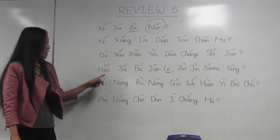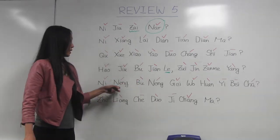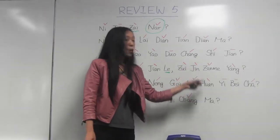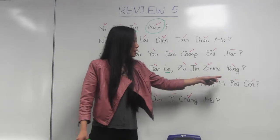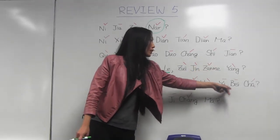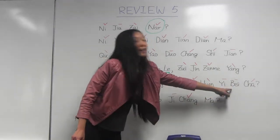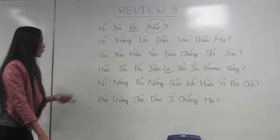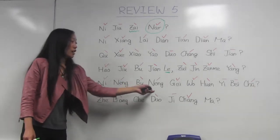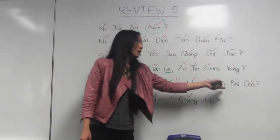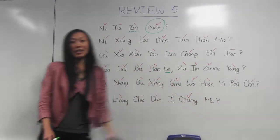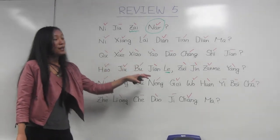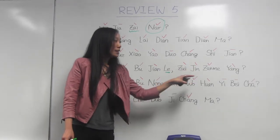你能不能给我换一杯茶? 你能不能 means 'can or cannot.' 给我 means 'give me.' 换 means 'change' or 'exchange.' 一杯茶 means 'one cup of tea' — 杯 is the measuring word for a cup of something. So all together: can you or can you not give me a change — one cup of tea? 你能不能给我换一杯茶.